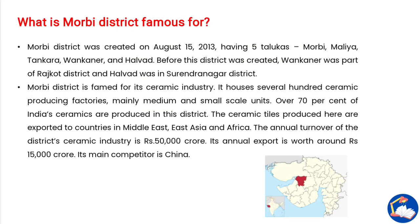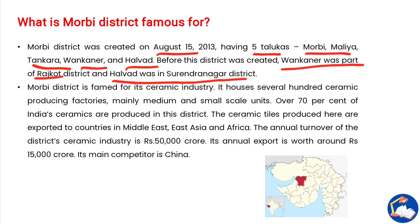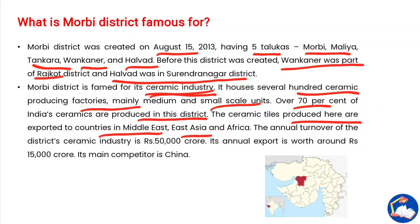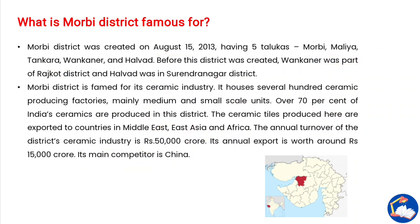Morbi district was created on August 15th, 2013, having five talukas: Morbi, Malia, Tankara, Wankaner, and Halvad. Before the district was created, Wankaner was part of Rajkot district and Halvad was part of Surendranagar district. Morbi district is famous for its ceramic industry, housing several hundred ceramic-producing factories — mainly medium and small-scale units. Over 70% of India's ceramics are produced in this district, with tiles exported to the Middle East, East Asia, and Africa. The annual turnover is about 50,000 crore and annual exports are worth 15,000 crore, with China as its main competitor.